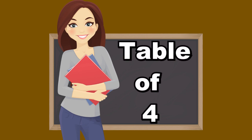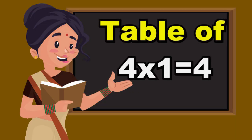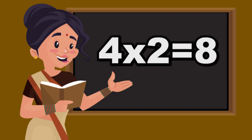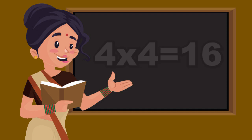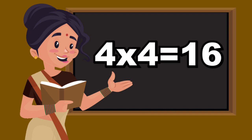Good morning children, today we learn the table of four. Four ones are four. Four twos are eight. Four threes are twelve. Four fours are sixteen.